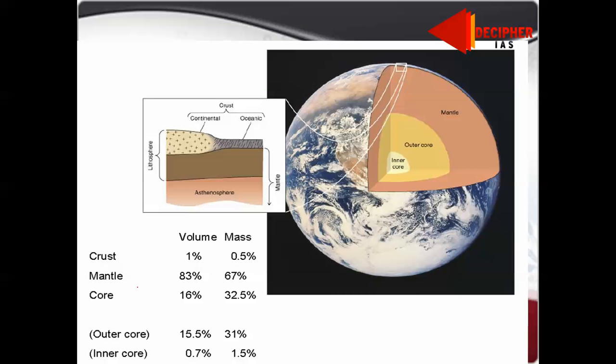It's very important to remember: crust is 1% of total volume and 0.5% of total mass of earth. Mantle comprises 83% of volume and 67% of mass. Core comprises 16% of volume and 32.5% of mass. If you total volume and mass, it comes to 100%. Continental crust is wider, oceanic is less wide. Till first 100 kilometers we have lithosphere, then till 250 kilometers asthenosphere.